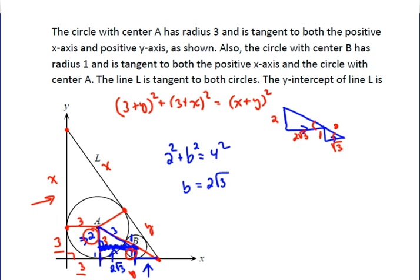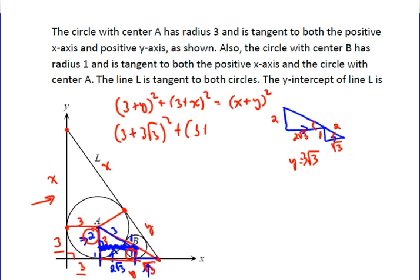Which actually shows that this side right there is 2, but that wasn't relevant to the problem. So now we found out that Y equals 3 root 3 because this is 2 root 3 and this is 3 root 3. So we go up and we plug in 3 root 3 for Y and we solve this problem.